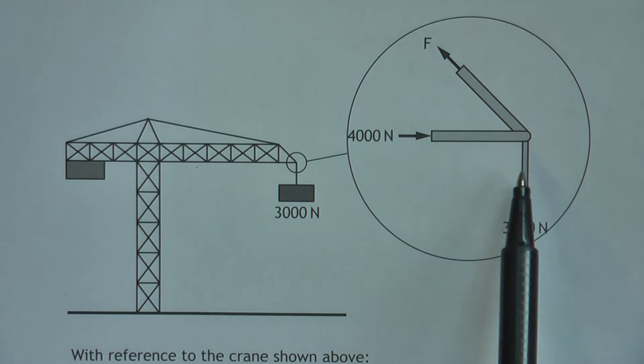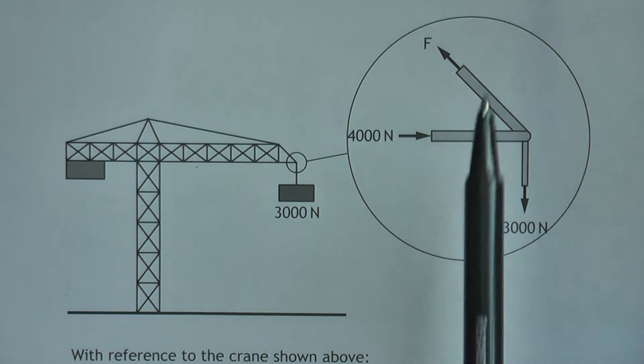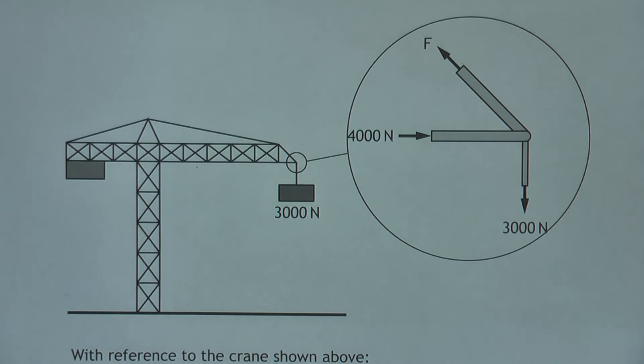Here's the diagram bigger. We know that's 3, we know that's 4. We have to find F. We can do this by drawing a triangle.